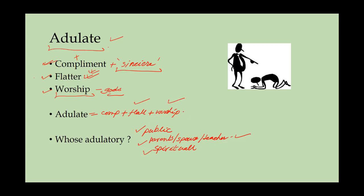Adulation means excessive worshiping, excessive flattery, or excessive compliments. Generally, this word is used in a negative sense — you should not adulate people. Whenever somebody is excessively worshiping somebody or excessively engaging in flattery, we say that person is adulating. So it has a negative connotation generally, though sometimes it has a positive connotation also. Just keep in mind it is used more in a negative sense than a positive one.